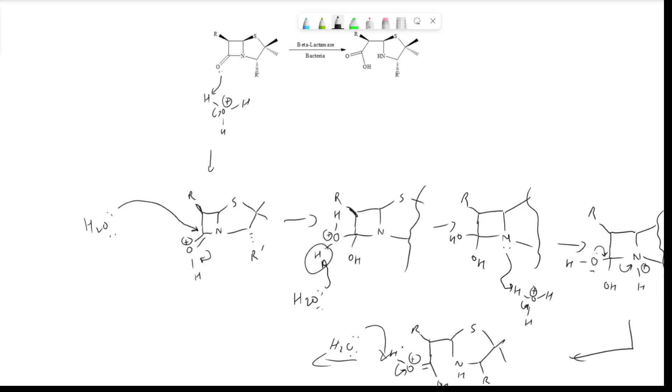In any amide you should be drawing protonation of the carbonyl first, because you need the carbonyl to be gone before you can use the lone pair on the nitrogen to do anything else with, which is necessary to finish this mechanism.